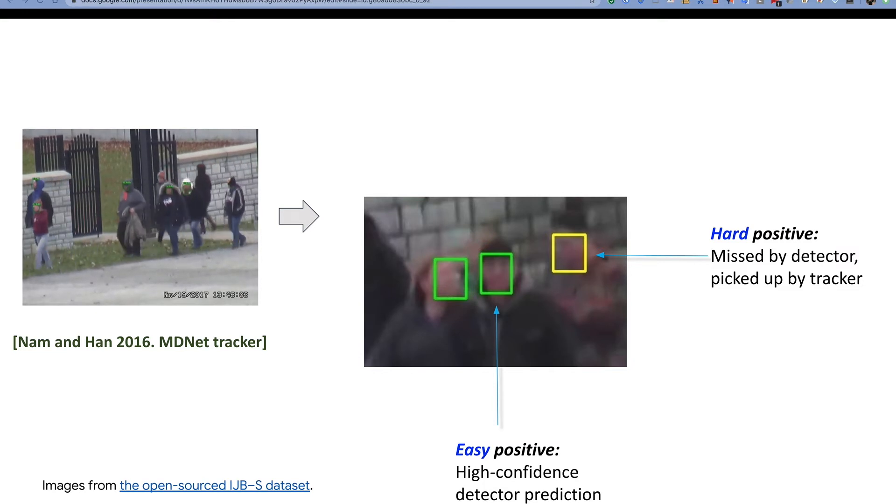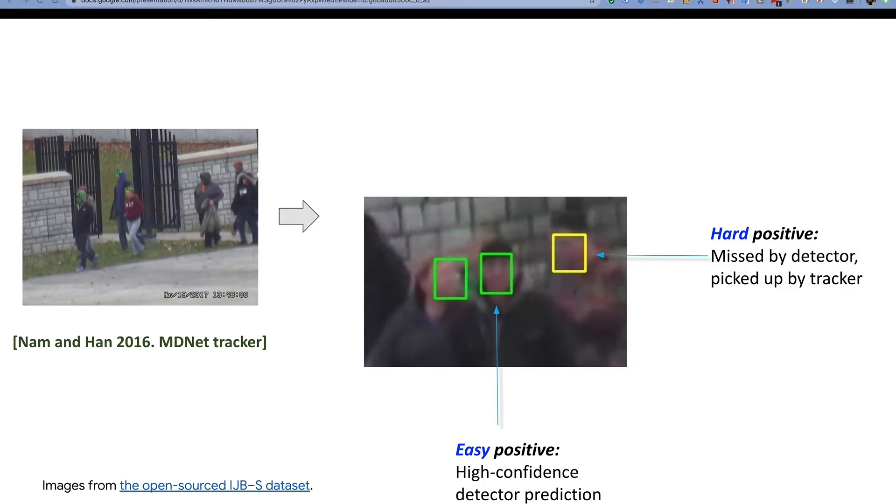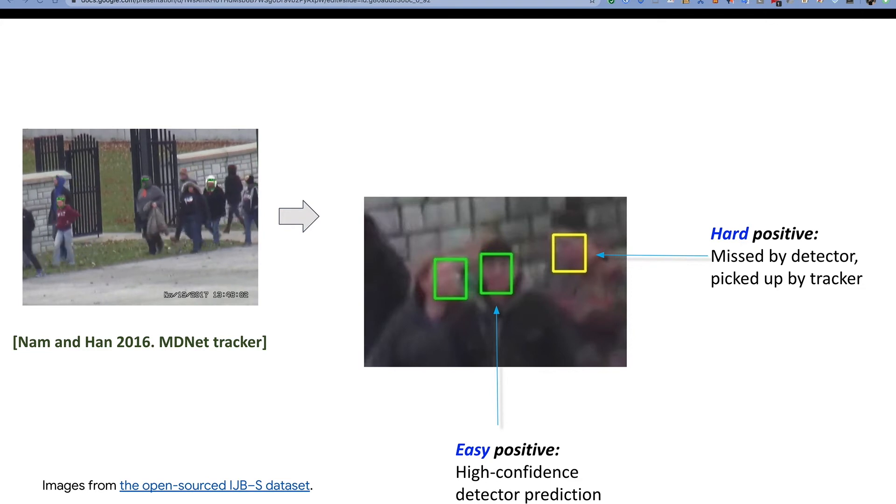The big picture of this paper is, given a video, we can run a detector and a tracker on the same video. We can use the tracker and the spatial temporal consistency to verify the detection results. Further, by jointly considering the tracking and detection results, we can distinguish easy and hard examples.